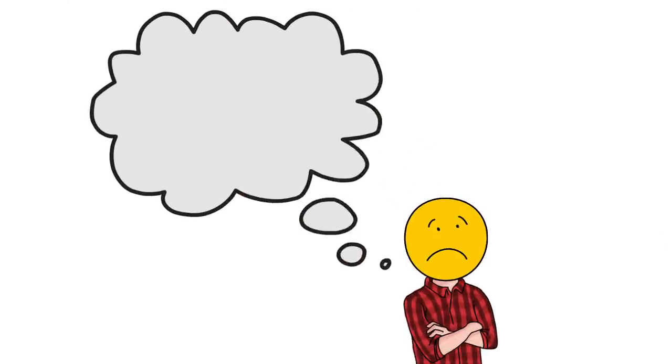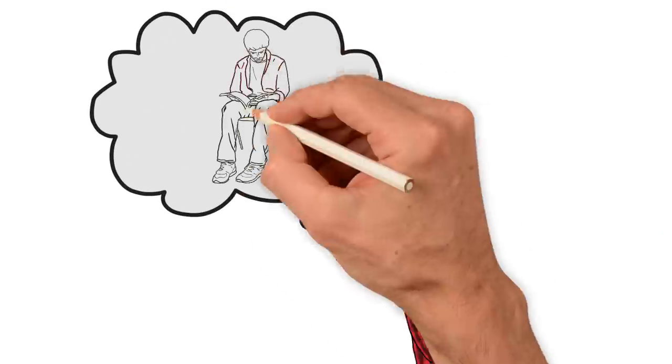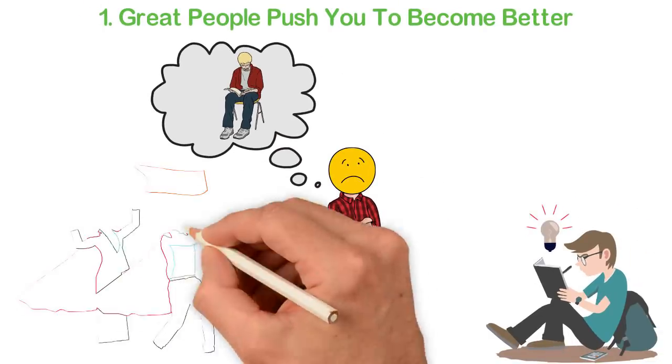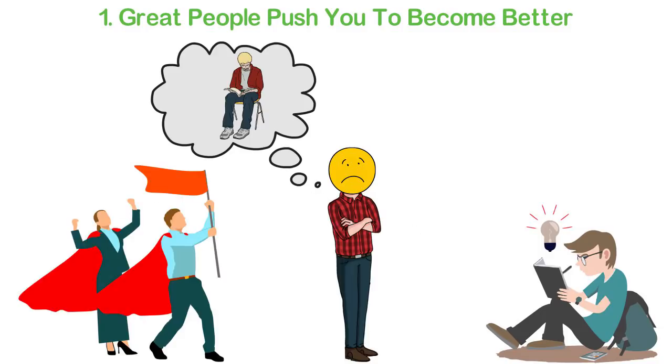The number one reason for failure for most people is that everyone around them is average. If you're connected with ambitious people, you'll be ambitious. If you make friends with average people, you'll become like them.